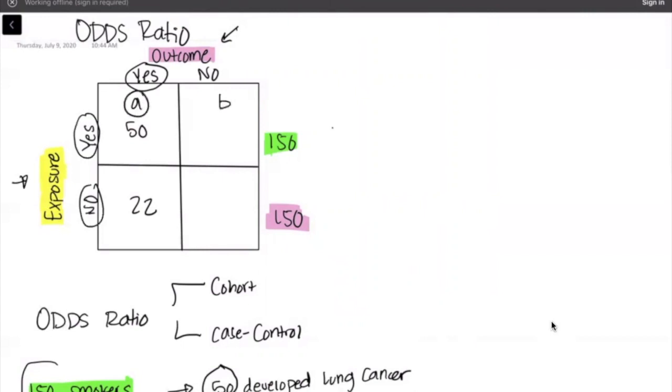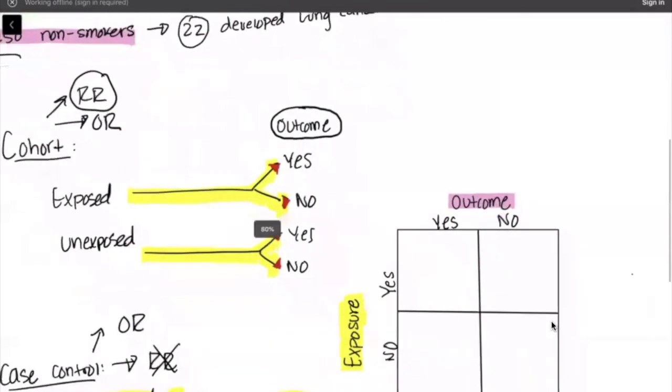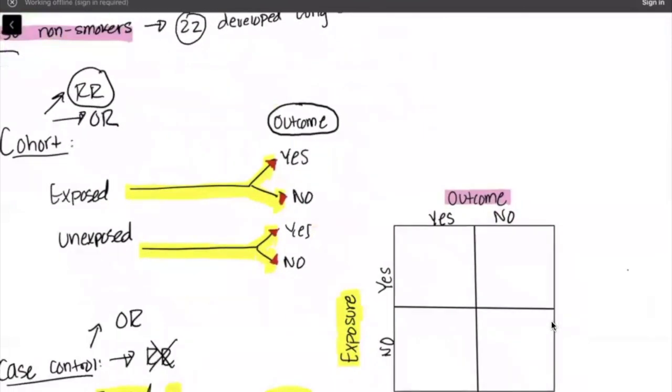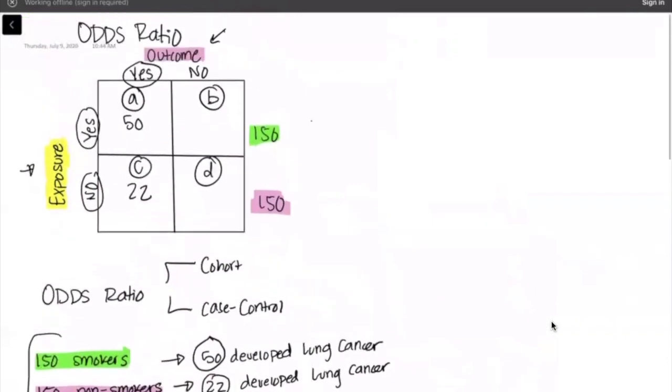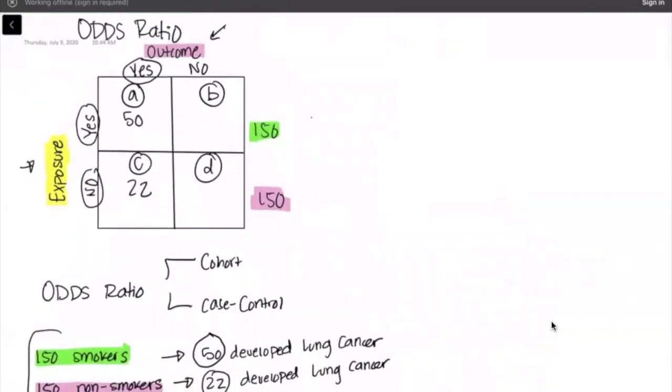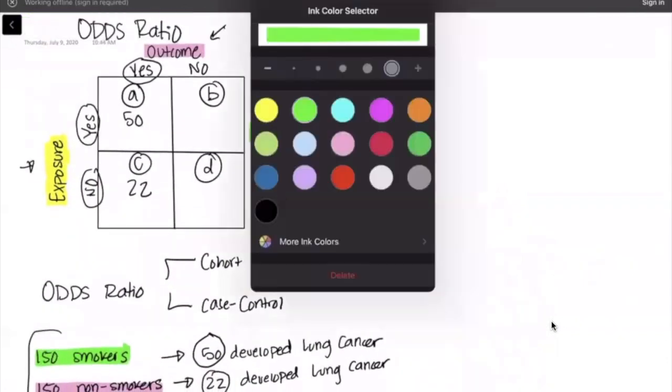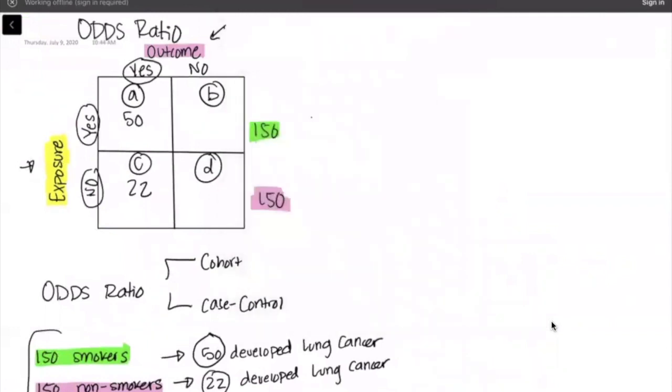Now in a cohort study, if you recall, we are starting with the exposed and the unexposed and looking at the odds or the risk of developing the outcome of interest. For that reason you want to think of a cohort study as reading your table from left to right. This is going to make more sense when we compare it to our case control, but if you pay attention to what we're doing here, we're reading our table from left to right.